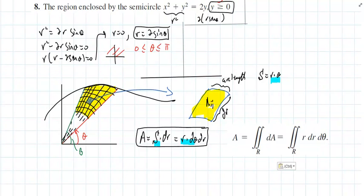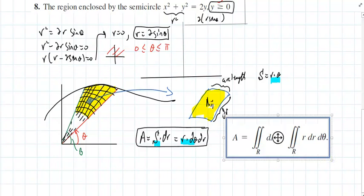The area looks something like this. When I want to convert from x and y to r and theta, every time I convert from x and y to r and theta, I pick up that extra r dr d theta. That's normally how it works.